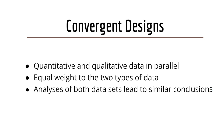In a Convergent Design, researchers collect both quantitative and qualitative data in parallel, usually at the same time and with respect to the same general research problem. The researchers give similar or equal weight to the two types of data and strive for triangulation, with the hope that analysis of both data sets leads to similar conclusions about the phenomena under investigation.